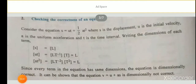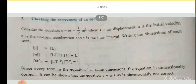The second application of dimensional analysis is checking the correctness of an equation using the principle of homogeneity — that means proving that the left-hand side equals the right-hand side. Consider the equation: s = ut + ½at², where s is displacement, u is initial velocity, a is uniform acceleration, and t is time interval.